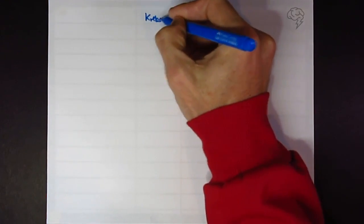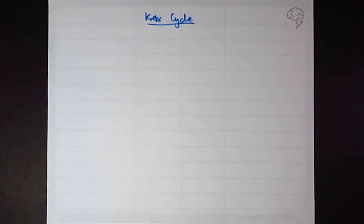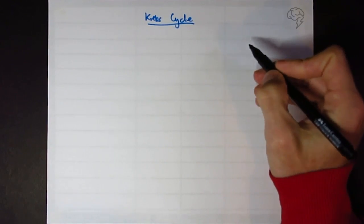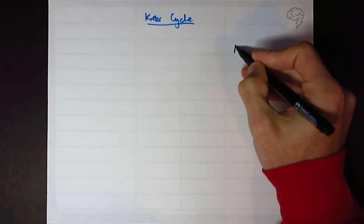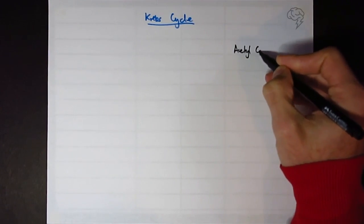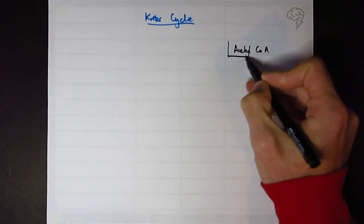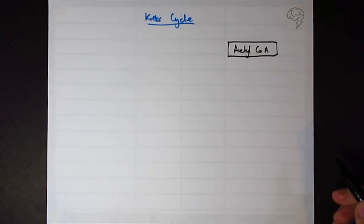Okay, so this is the Krebs cycle. So again, we're going to do the diagram on the right, notes on the left here. We're going to start with what do we inherit? What is the final stage of link reaction?